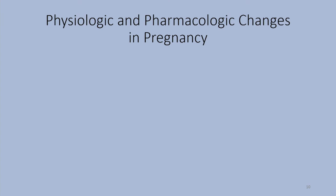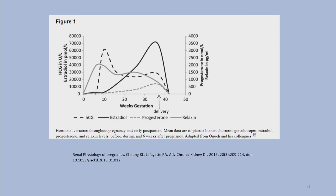Next I'd like to talk about physiologic and pharmacologic changes during pregnancy. This slide shows changes in hormonal concentrations during gestation — beta-HCG, estradiol, progesterone, and relaxin are all increasing during pregnancy. This is a very scientifically, medically, and hormonally complex situation.